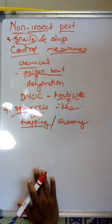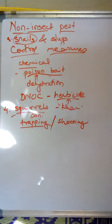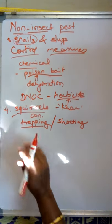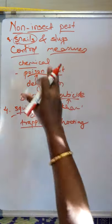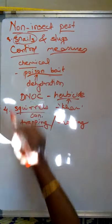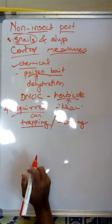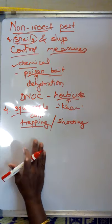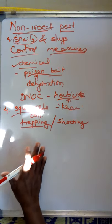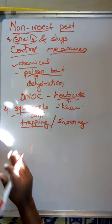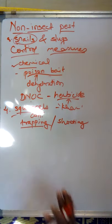So here we have finished the topic of non-insect pests. In the next video we will study pest control practices — the different types of pest control practices including chemical method, cultural control, and biological control, which we will study later on in the next video. Thank you.